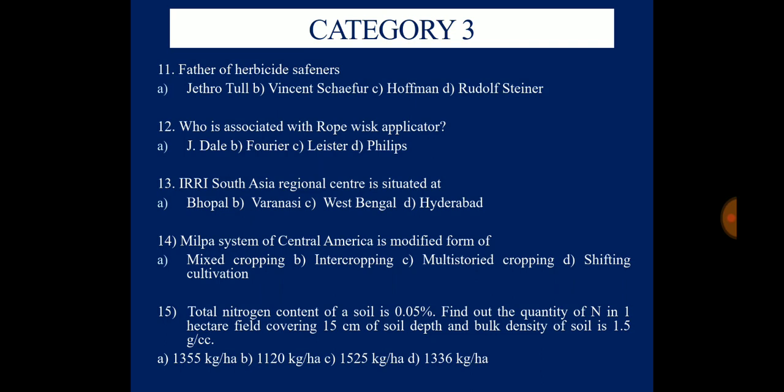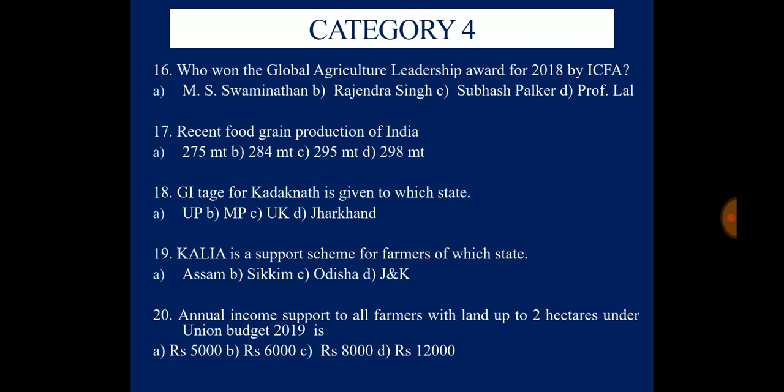Moving on to the last category — Current Agriculture. Question 16: Who won the Global Agriculture Leadership Award for 2018 by ICAR? Options are MS Swaminathan, Rajendra Singh, Subhash Palekar, or Professor Lal. Question 17: Recent food grain production of India is — 275 million tonnes, 284 million tonnes, 295 million tonnes, or 298 million tonnes.